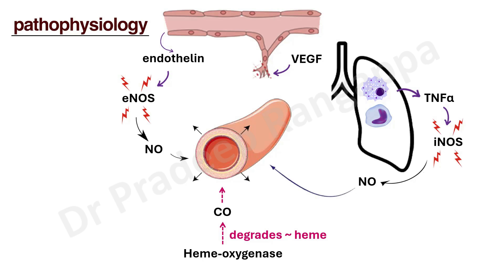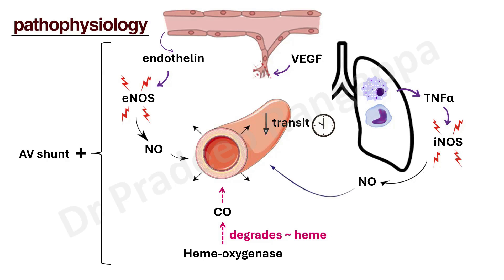All these different processes lead to vasodilation of the pulmonary vasculature. The net reason hypoxia happens is pulmonary vasodilation causes slowing of blood flow and reduced transit time for gas exchange. In the setting of pulmonary vasodilation, this leads to V/Q mismatch and AV shunting, which together cause hypoxemia. Pictorially: intrinsic vasodilation allows AV shunts, leading to V/Q mismatch and hypoxemia.